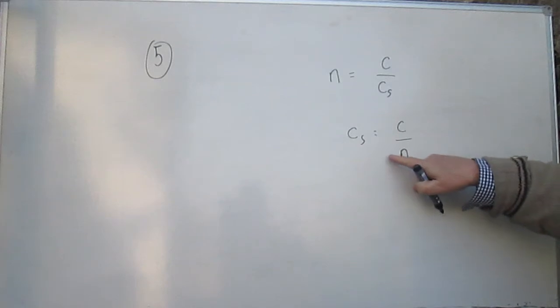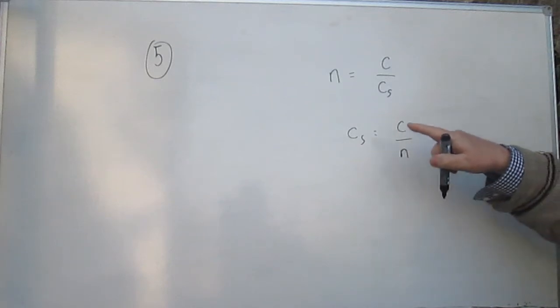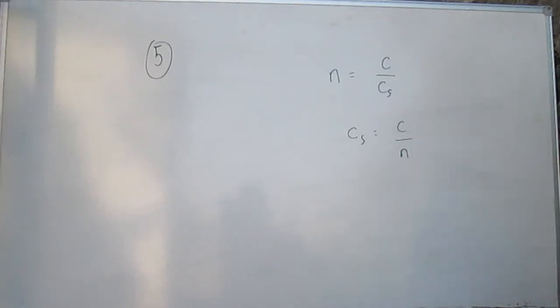And the bigger the refractive index, in other words, the denser in optical terms the medium is, the smaller the velocity will be in that medium. So going to an optically denser medium, the velocity decreases, so that narrows it down to a and c.